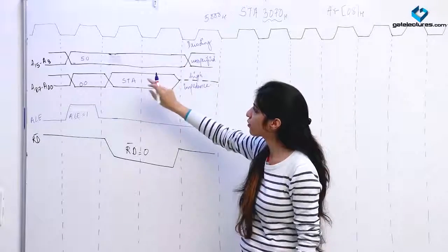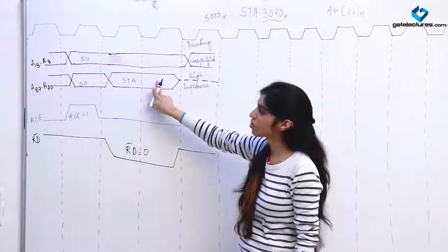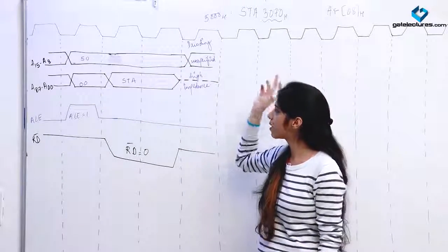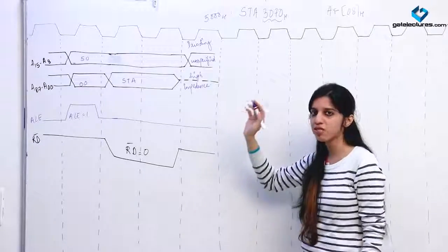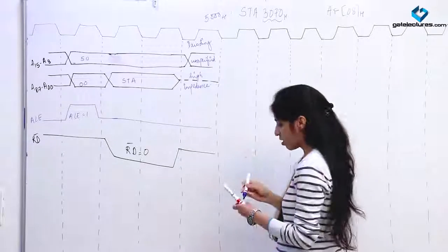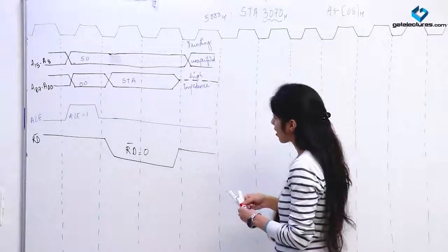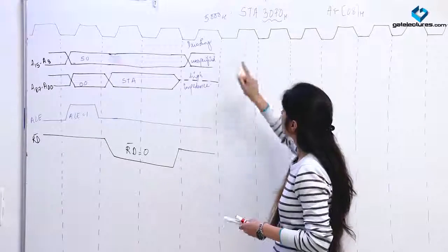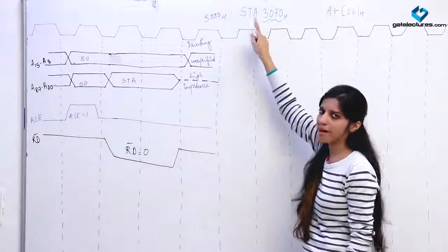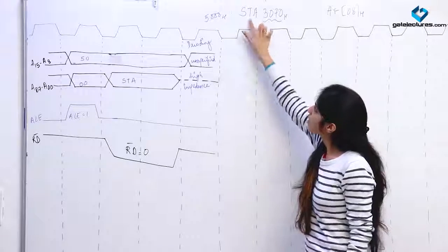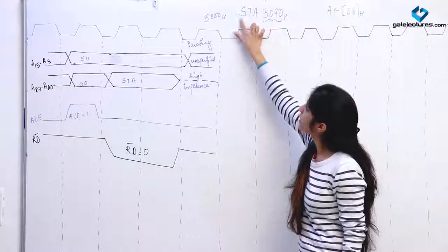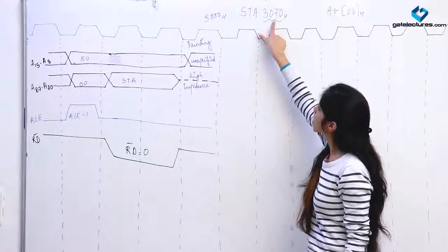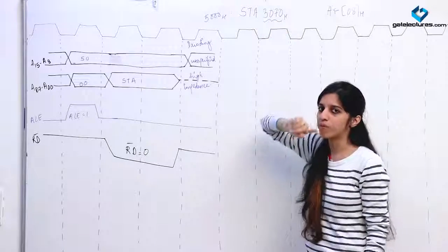Decoding takes place in this cycle. After decoding, the microprocessor knows that now the contents of the accumulator have to be stored. We need the address of the location where the contents have to be stored. This instruction is a 3-byte instruction: the opcode takes 1 byte, and the two address bytes each take 1 byte.